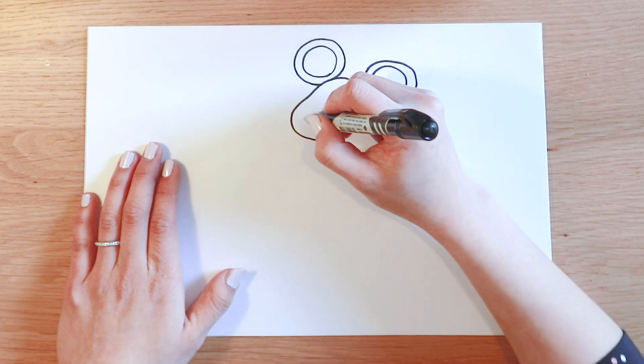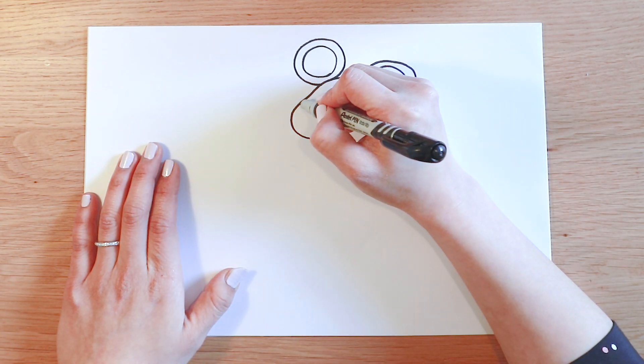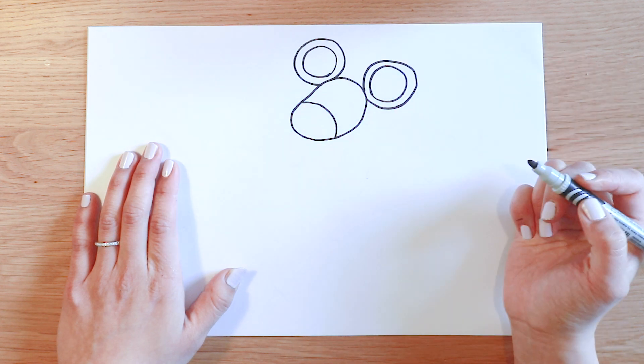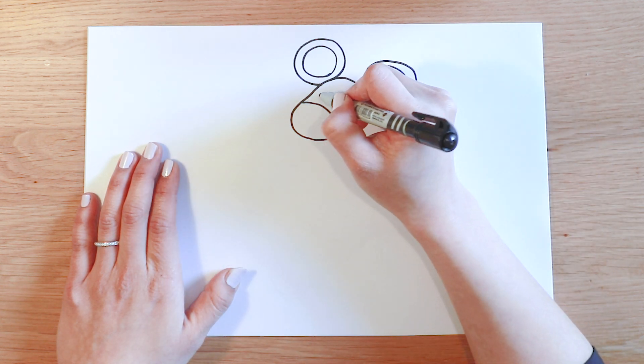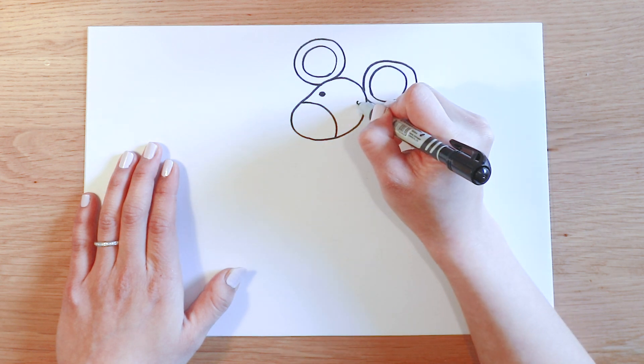Draw a big curvy line for his nose. Start from here, like that. For Monty's eyes, draw a little circle here and another one here.